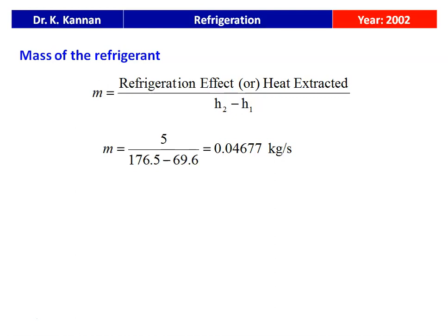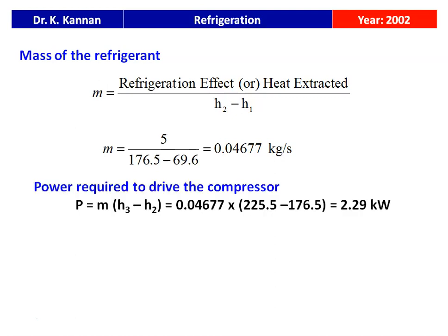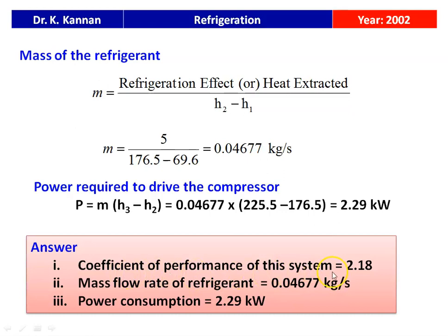Mass flow rate M equals refrigeration effect divided by (H2 minus H1): 5 divided by (176.5 minus 69.6) equals 0.04677 kg/s. Power required to drive the compressor P equals M multiplied by (H3 minus H2): 0.04677 multiplied by (225.5 minus 176.5) equals 2.29 kilowatts. COP is 2.18, mass flow rate is 0.04677 kg/s, and power consumption is 2.29 kW.